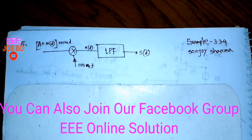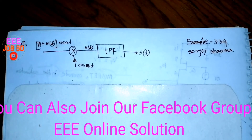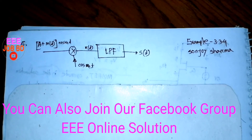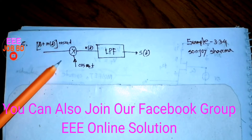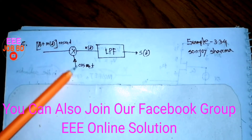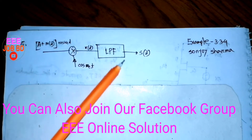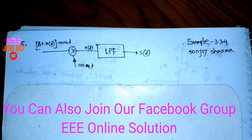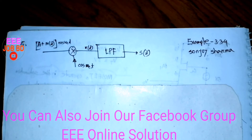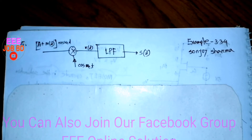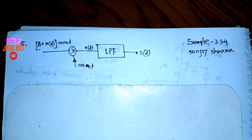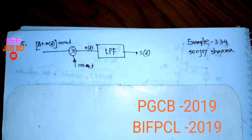Hello everyone. I'm going to talk to you about this problem. The question involves a model of the signal — it's a carrier signal, it's a low-pass filter, it's a final output. It's very simple. This question is from the PZCV 2019 assistant engineer exam.